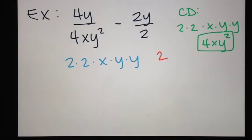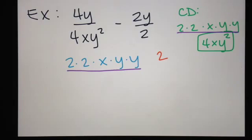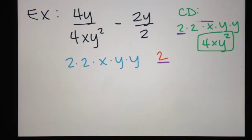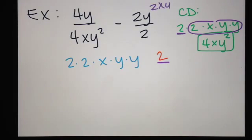My first fraction had two 2s, an x, and two y's, so the left fraction does not need to be fixed at all. The right fraction, however, only had one 2, so it needs the rest: a 2, an x, and a y squared — that's 2xy squared.